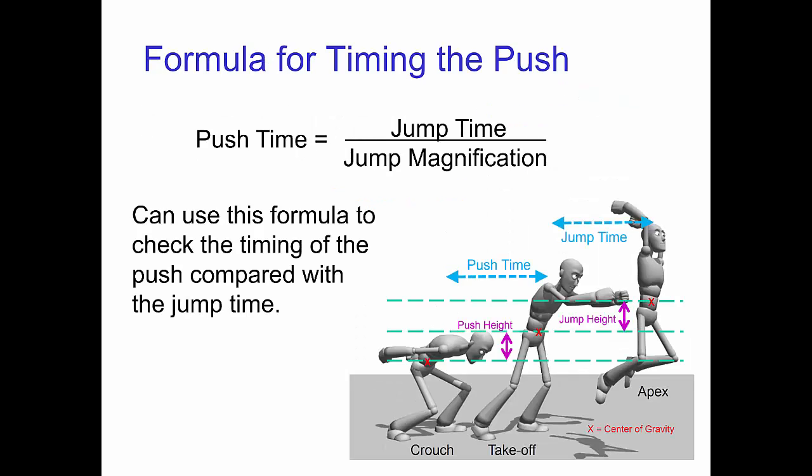You can use this formula to check the timing of the push compared with the jump time. The formula says the push time from crouch to take off equals the jump time from take off to apex divided by the jump magnification.